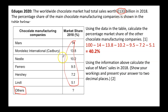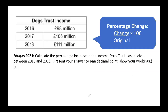Next: using the information above, calculate the value of Mars's sales in 2018. The total is 133 billion and Mars have 14% of that. You can divide by 100 and multiply by 14, or multiply by 0.14 — both give the right answer. Remember to include 'billion' at the end, give it to two decimal places, and since this is a value and not a percentage, include the pound sign.